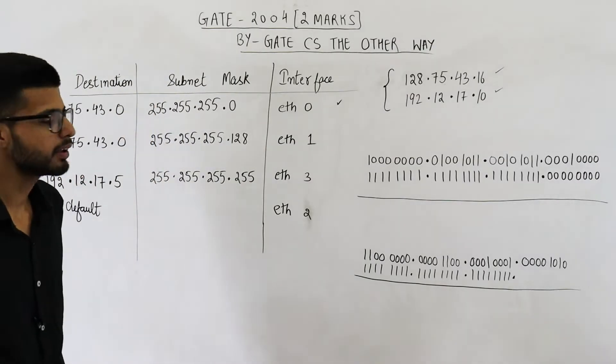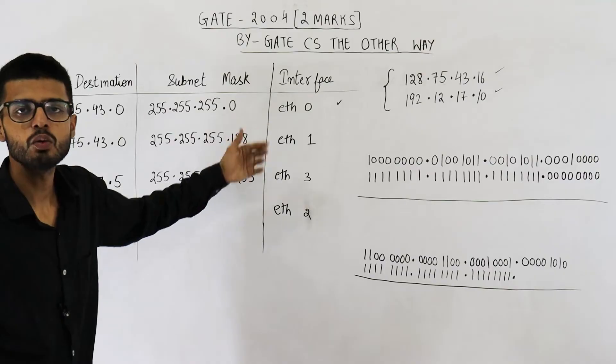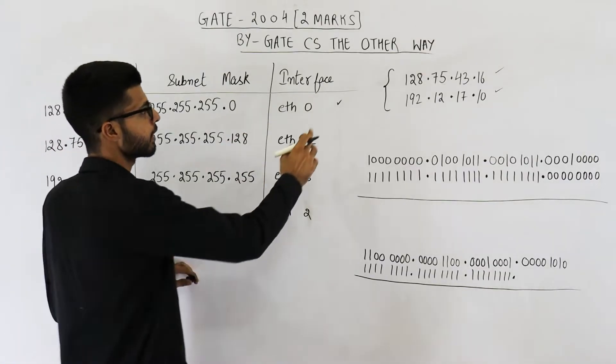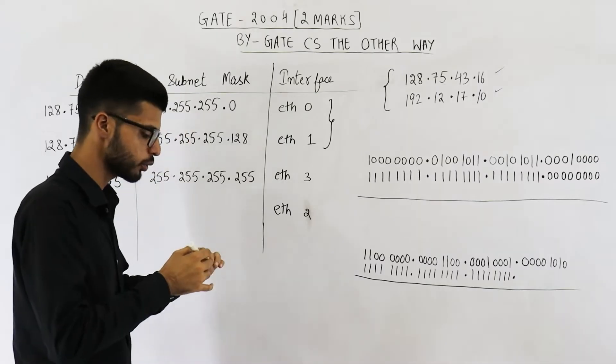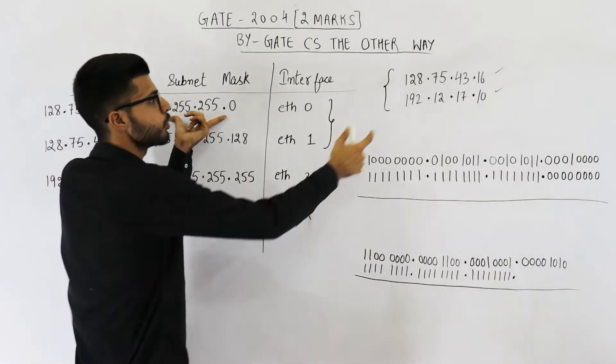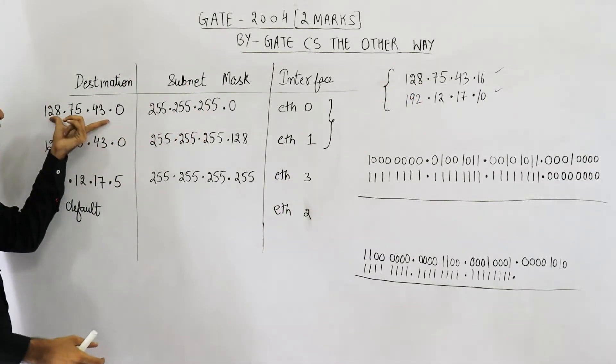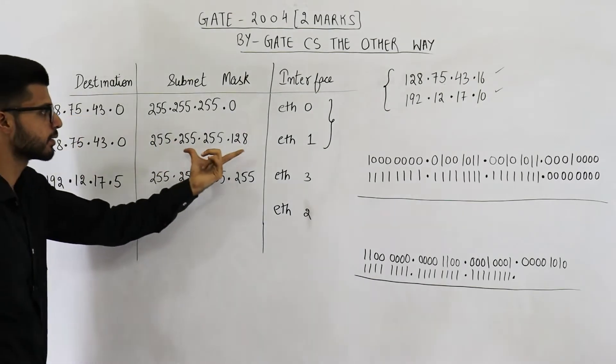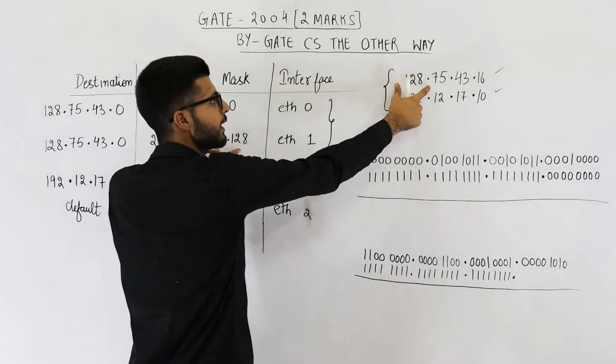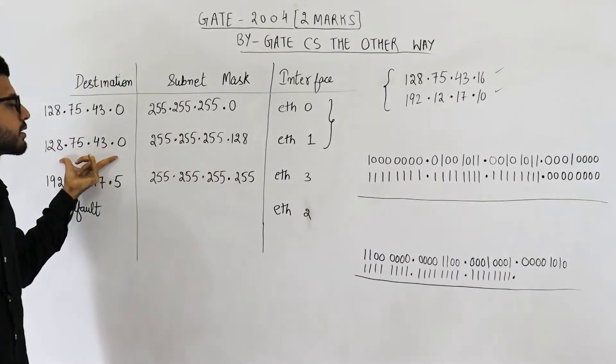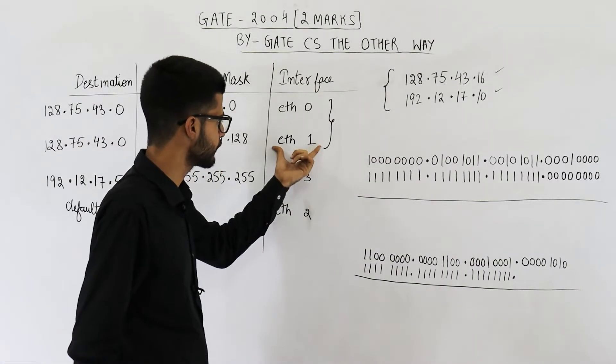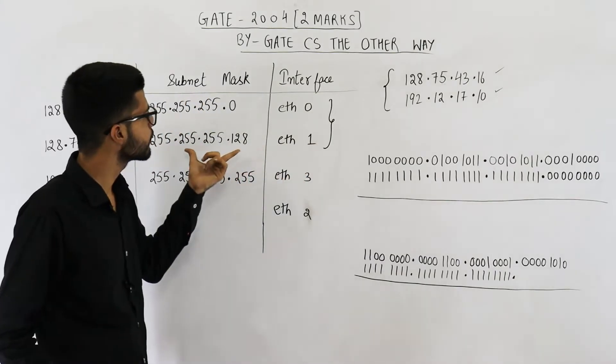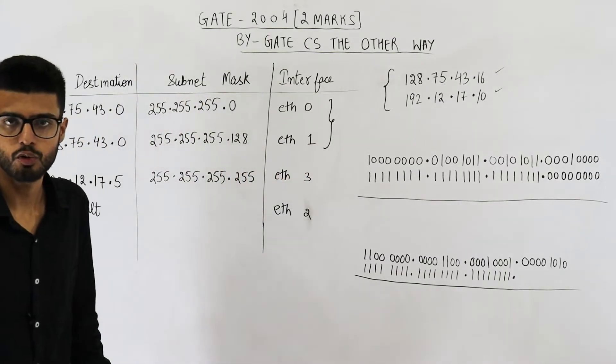Now there is a possibility that more than one entries match. For example, these two entries might match. That means when you perform AND of this one and this one, the result matches with this. And similarly, when you perform AND of this one and this one, still the result matches with this. In such a case, you are going to select the interface where the subnet mask has highest number of ones.